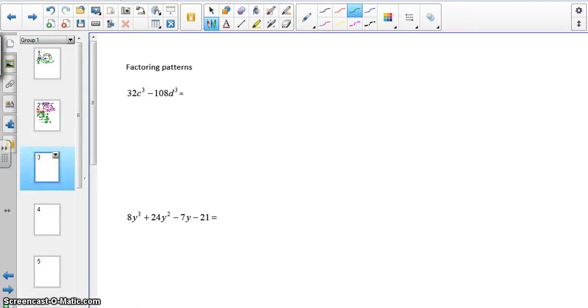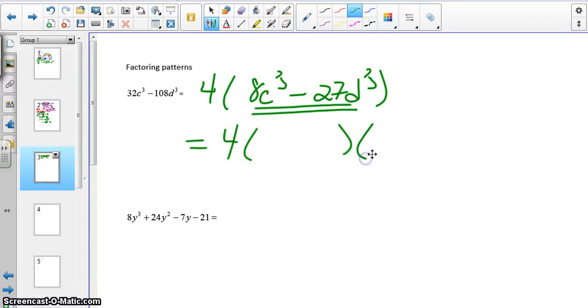These are some factoring problems. Every time we factor, we want to ask ourselves if there is a greatest common factor. And in this problem that we're looking at here, there is. You could take out a four. And then your remaining terms would be 8c to the third minus 27d to the third. This now is a difference of cubes. You might have learned this using the word soap. Before we worry about that, though, let's figure out what the terms are. This first set of parentheses is two terms and the second set of parentheses is three terms. You take the cube root of each of these terms. So this would be 2c and this would be 3d.